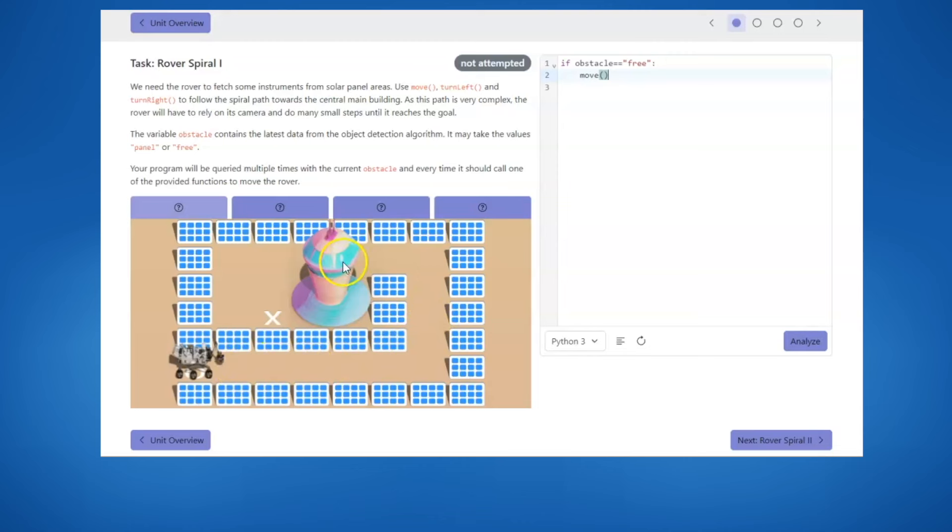Once our algorithm is in place, the robot will continue to follow it over and over until it reaches its destination. Try finishing this task and then complete the other automation tasks.